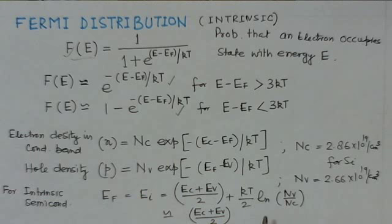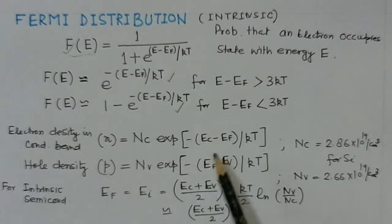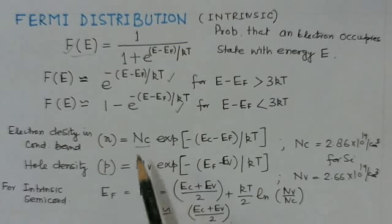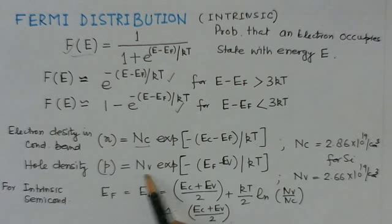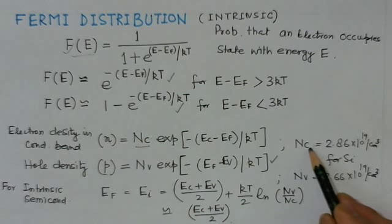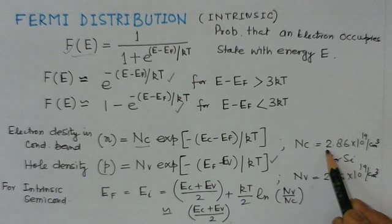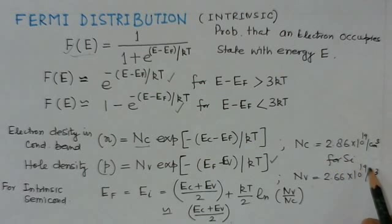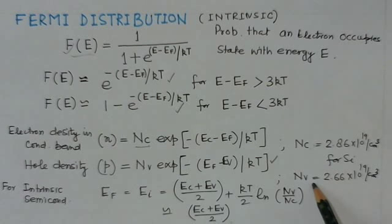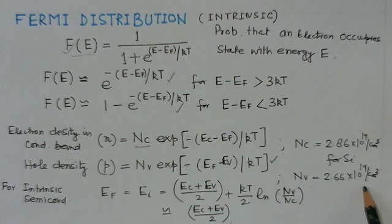The electron density in the conduction band is n = Nc·exp(−(Ec − Ef)/kT), where Nc is the number of available states in the conduction band. Similarly, the hole density is evaluated using Nv. The number of available states is much higher than the number occupied by mobile charges.